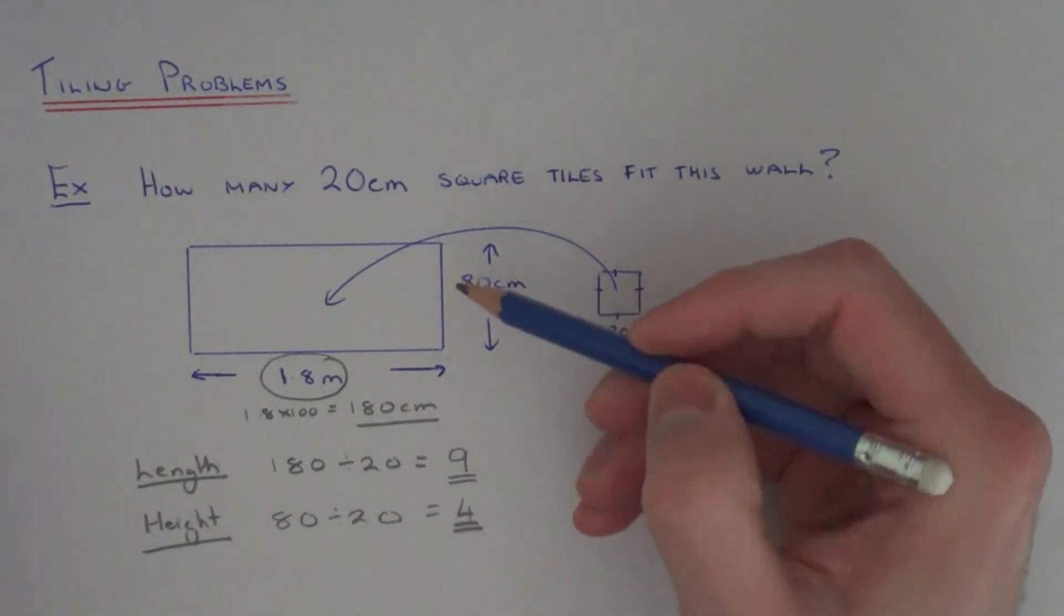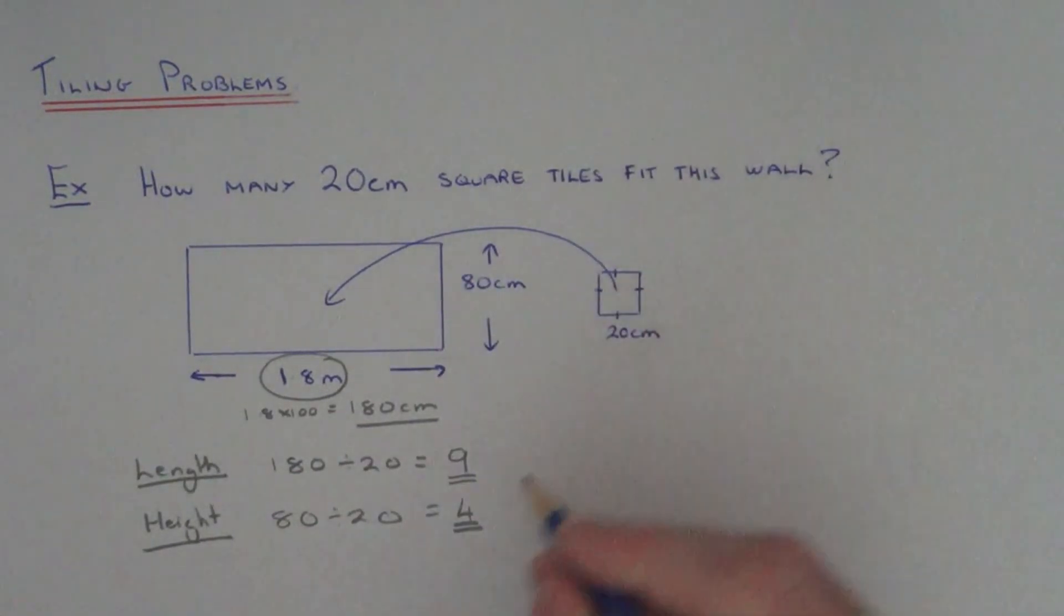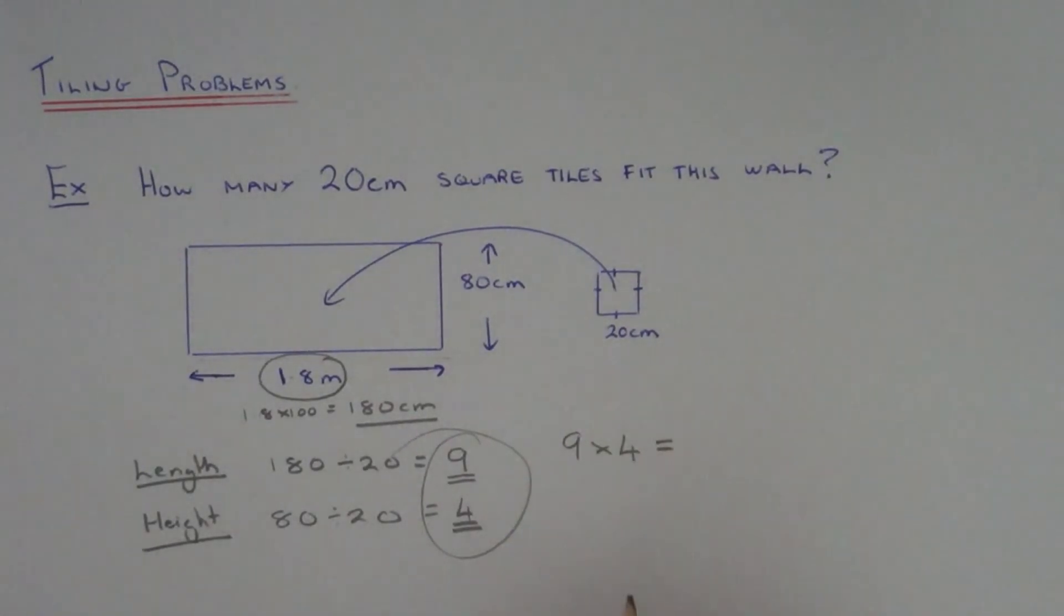So basically this is telling us we've got 4 rows of 9 tiles. We just need to multiply these two numbers together. 9 times 4 is 36. So we need 36 tiles to tile this wall space.